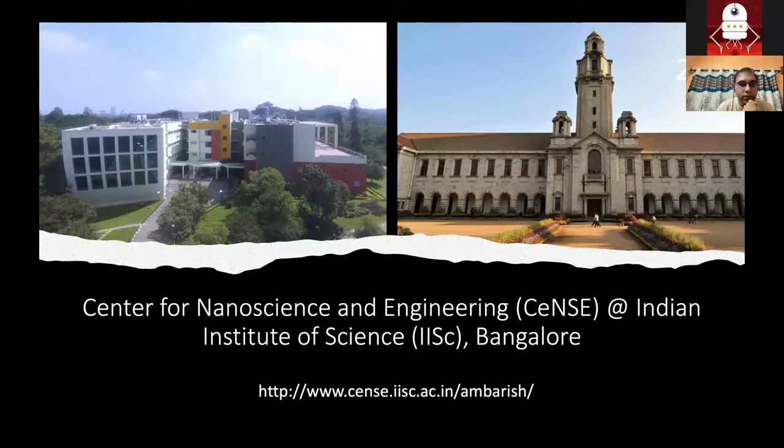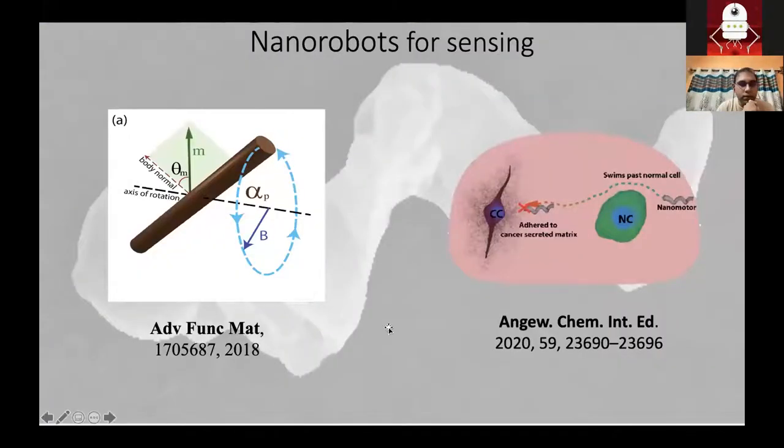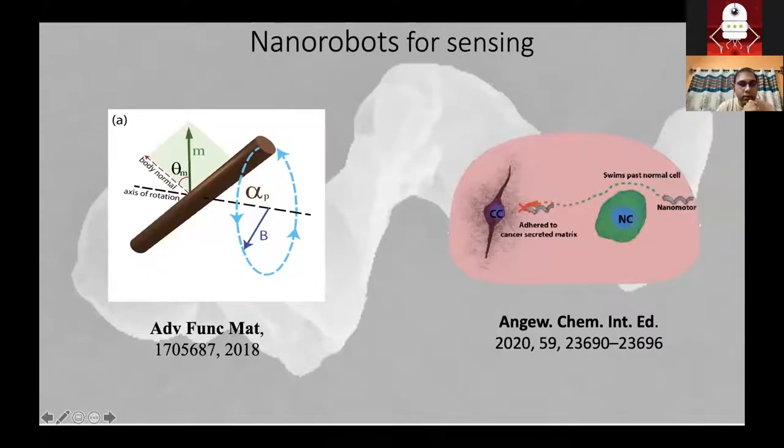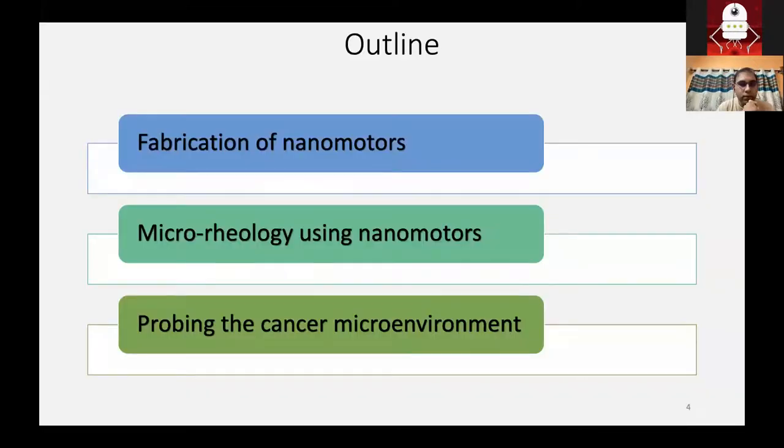Today I'm going to be talking about nanorobots, how to use robots for sensing, and I'm going to be focusing on these two papers. The first one talks about how you can do rheology using nanomotors, and the second one is where we use the techniques in the first paper in a cancer microenvironment. This is a brief outline of my talk. I'll be talking about some tweaks that we did to the fabrication of nanomotors. These are not talked about that much in the papers, but these are very important for the results that we got. I'll be talking about micro rheology using nanomotors and probing the cancer microenvironment.